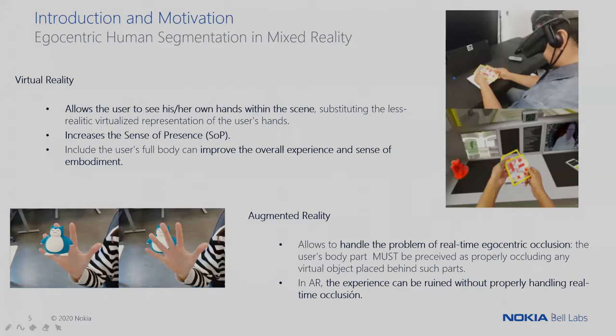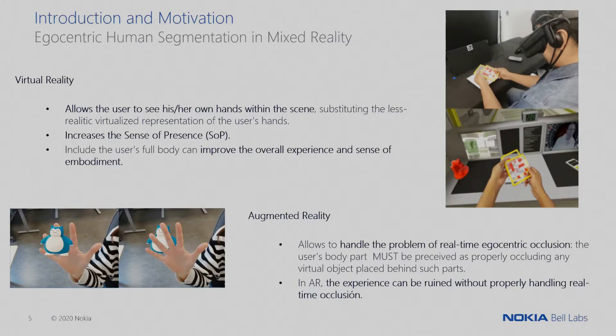Let's understand why egocentric human segmentation is so important for mixed reality technologies. In the case of virtual reality, in which the user is fully immersed in the experience, it can allow the user to see his or her own hands within the scene. This way we can substitute the less realistic avatar-like representation of the user's hands, increasing the sense of presence as the user is now represented by their own body rather than an avatar.